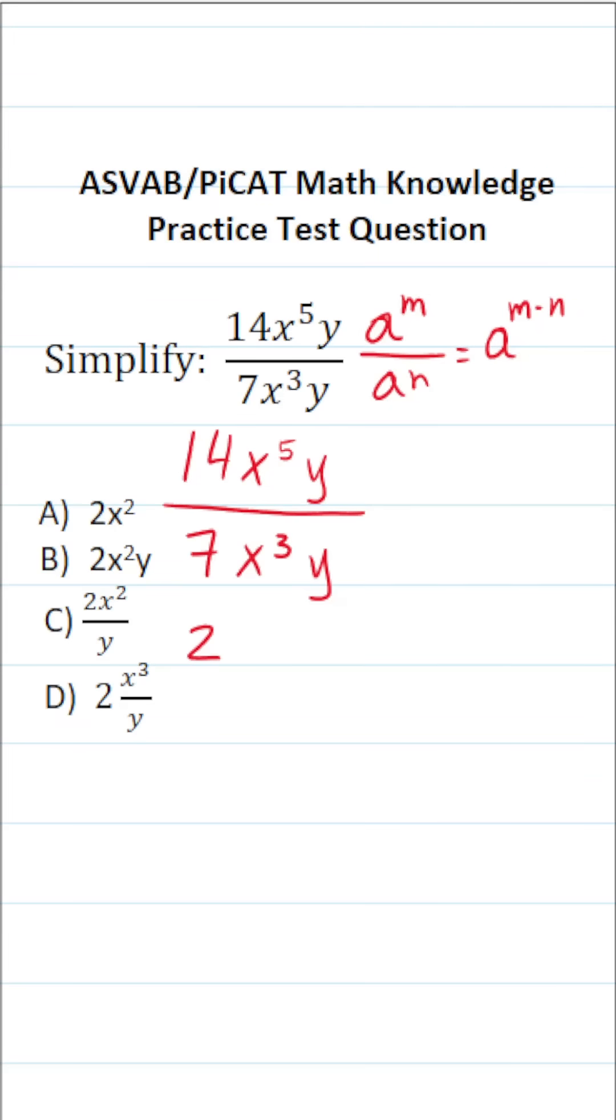So what do we have for our x's here? We have x to the 5th over x to the 3rd. According to the quotient rule, that's going to be x to the 5 minus 3 power, which is x to the 2nd power, x squared. So x to the 5th over x to the 3rd simplifies to x squared.